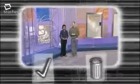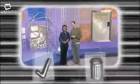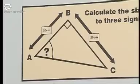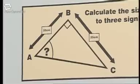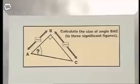It's the time of the show where we have to do some maths for real. We're both going to answer the same question, but only one of us will do it correctly. The other will make a deliberate mistake, which you have to spot. You decide - do you tick it or trash it? A right-angled triangle has a length AB of twenty centimetres and a length BC of twenty-five centimetres. Calculate the size of angle BAC, giving your answer correct to three significant figures.